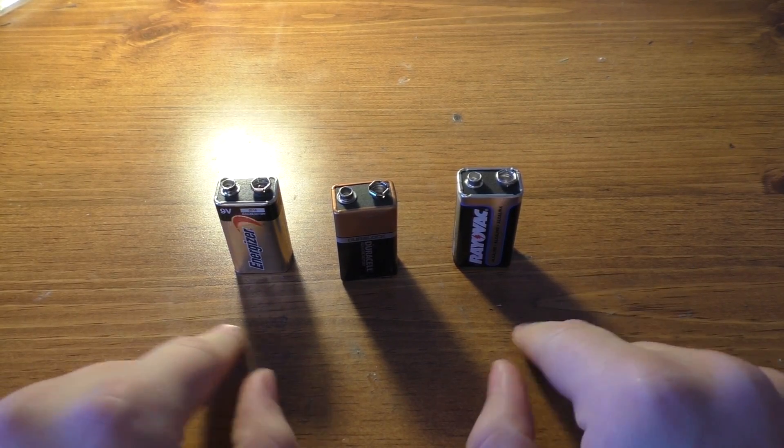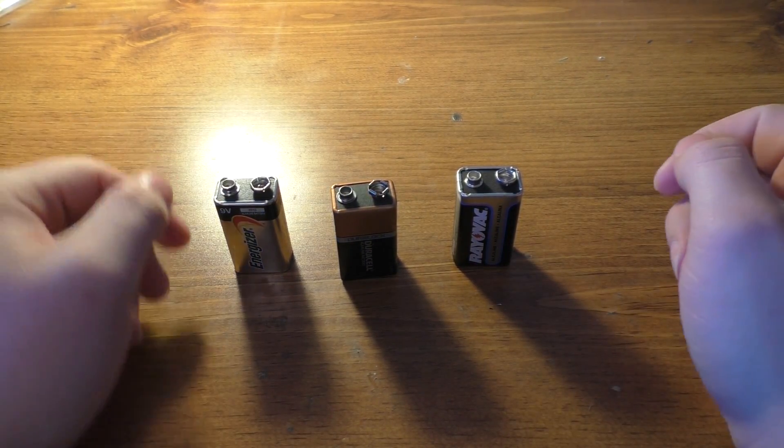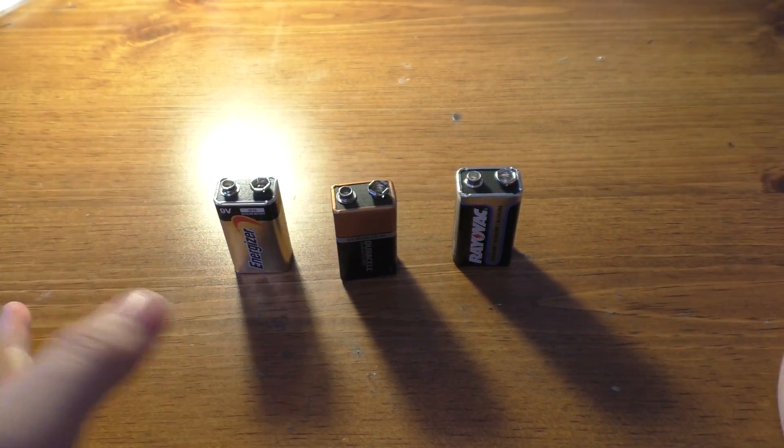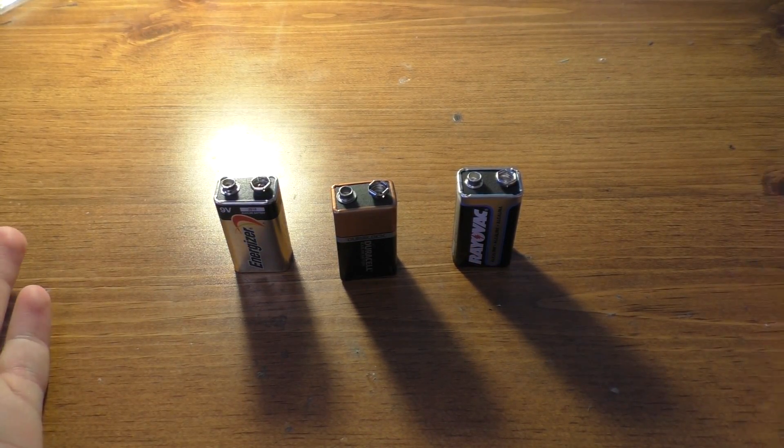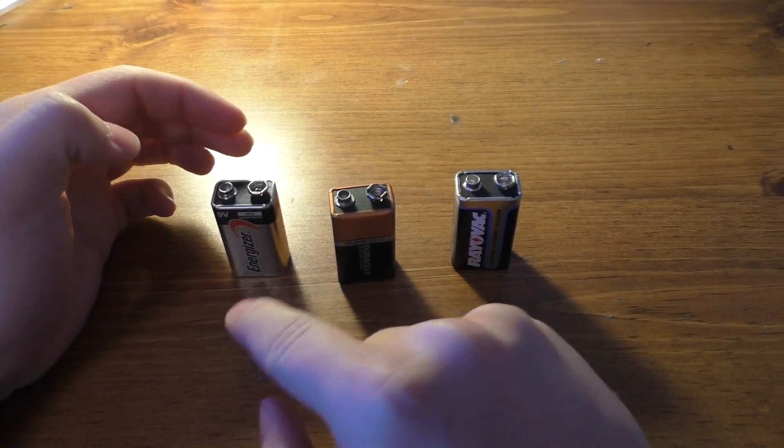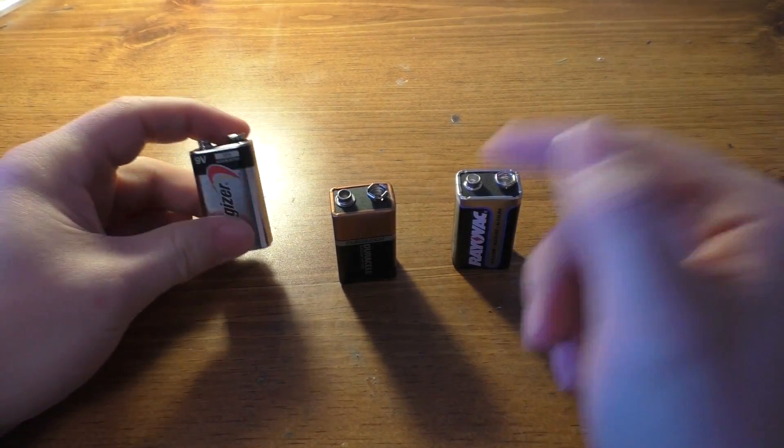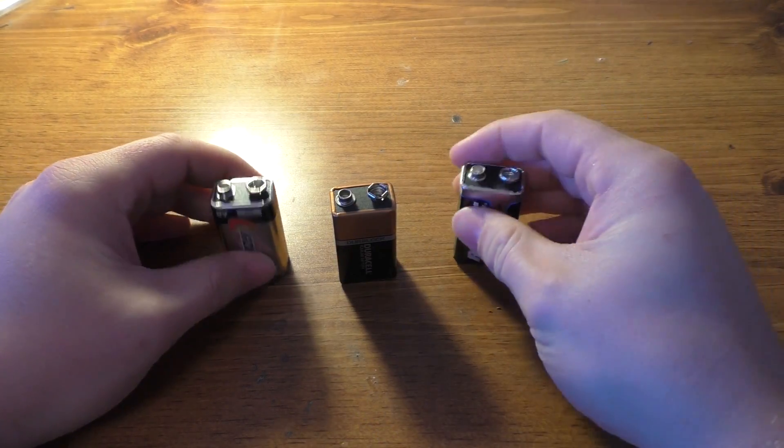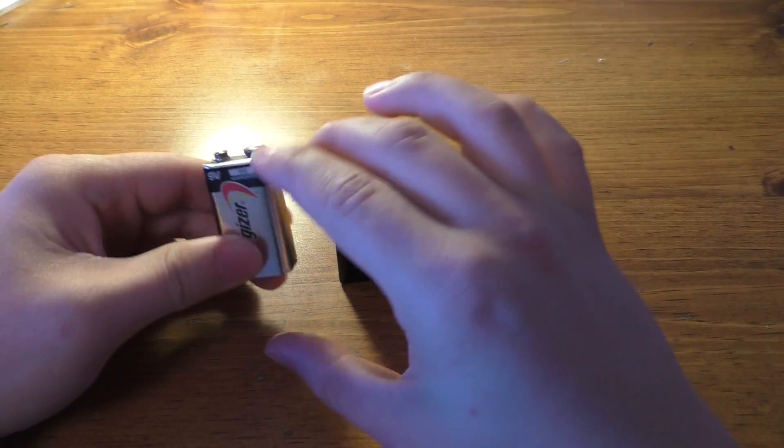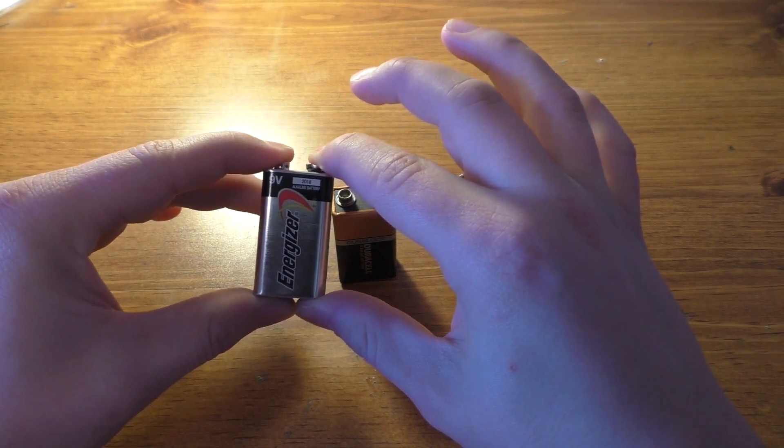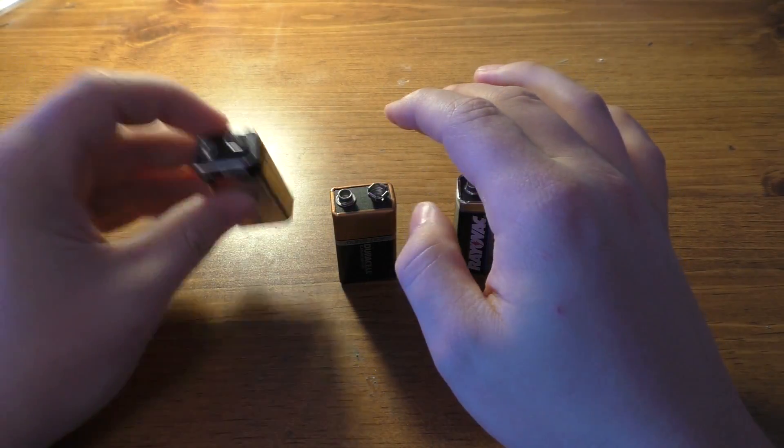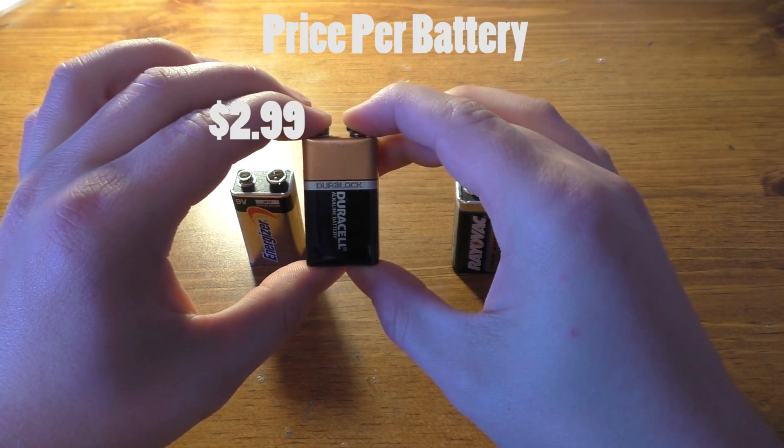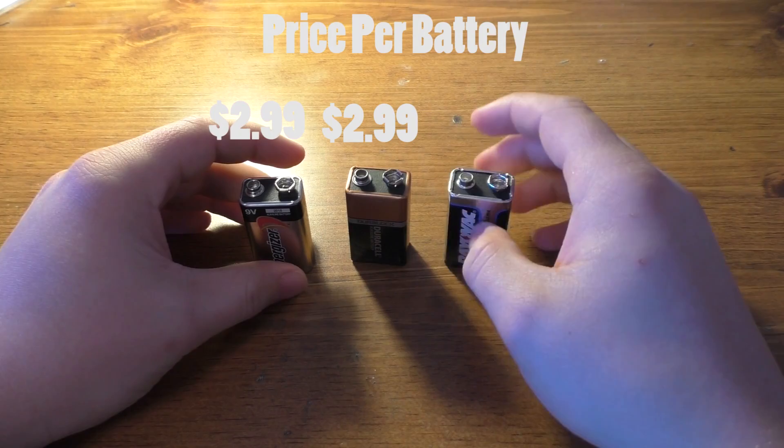Let me start off price-wise on these things. For four packs, I went on Walmart.com because that seems like a place where you'd buy batteries. I looked up 9-volt batteries and found four packs of each type. For a four-pack of Energizers, that'll cost you $11.97. For a four-pack of Duracells, it'll cost you $11.97, at least the same price.